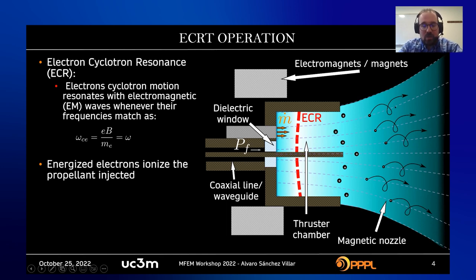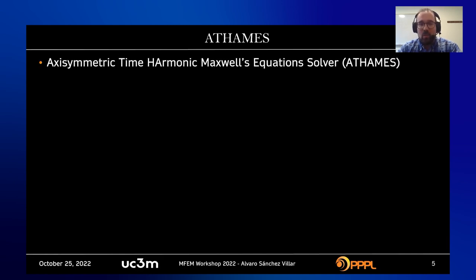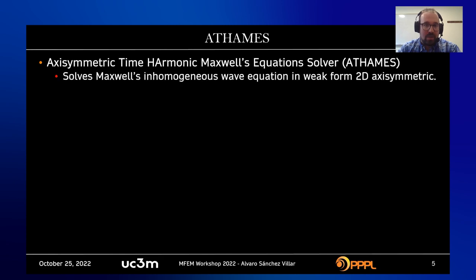Our problem is to solve for the electromagnetic wave solutions in this kind of configuration. These thrusters are very small, on the order of centimeters, but there are also higher-power versions. We decided to develop an axisymmetric time-harmonic Maxwell's equation solver called OBTAINS, which solves Maxwell's inhomogeneous wave equation in weak form in a 2D axisymmetric geometry.